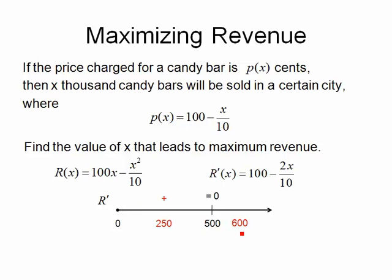When I put 600 in, 2 times 600 is 1200 divided by 10 is 120. And 100 - 120 is a negative number. So what this tells me is the graph was increasing, reached the critical point, and then decreasing. And that verifies that this must have been a maximum because it changed from increasing to decreasing.